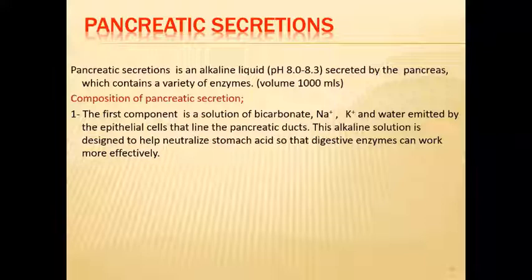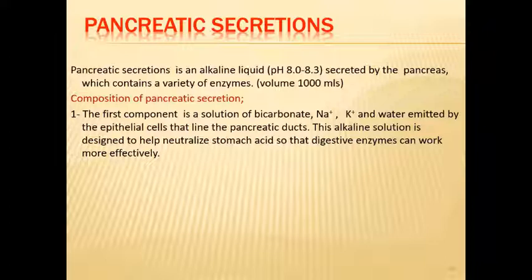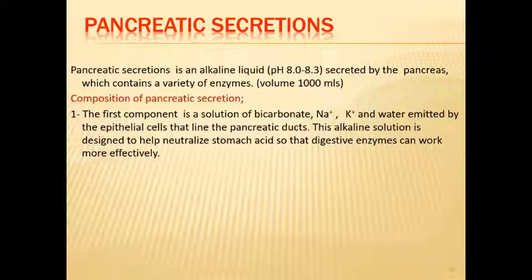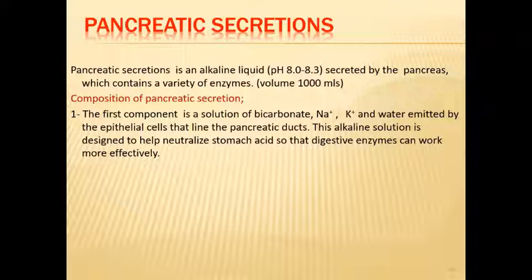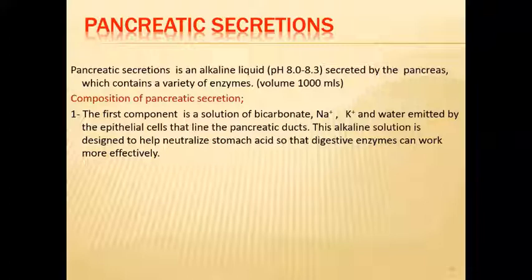The ductal cells - not the acinar cells - produce much of the bicarbonates, sodium, electrolytes, and water. Because of the high bicarbonate content, the solution is alkaline. This alkaline solution is designed to neutralize stomach acid so that digestive enzymes can work effectively. Enzymes in the duodenum operate best at neutral or alkaline pH, so neutralization provides the appropriate environment for digestion.